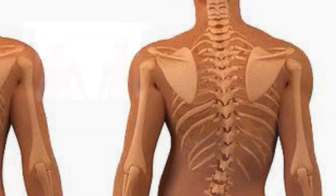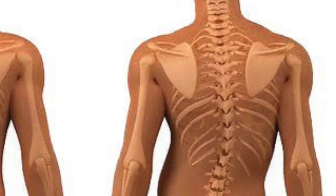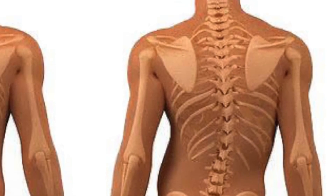Often overlooked, a short leg or a leg length discrepancy is a condition where one leg is shorter than the other. This causes incorrect curvatures of the spine.